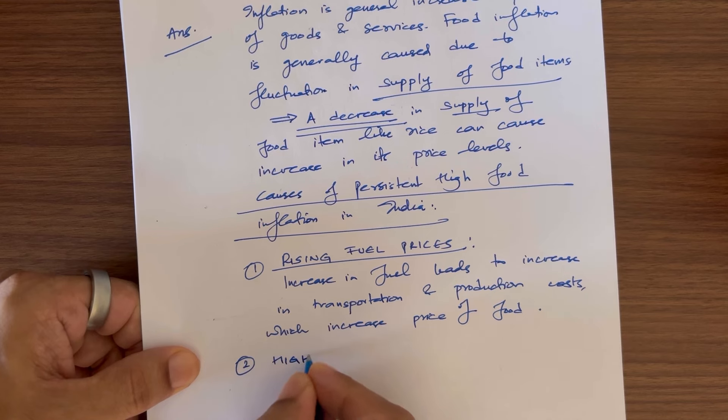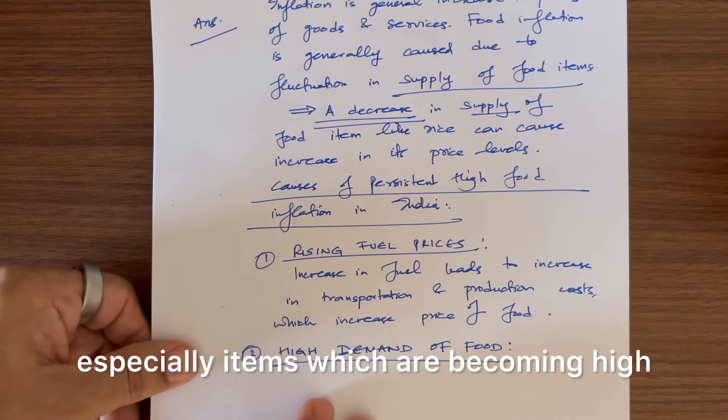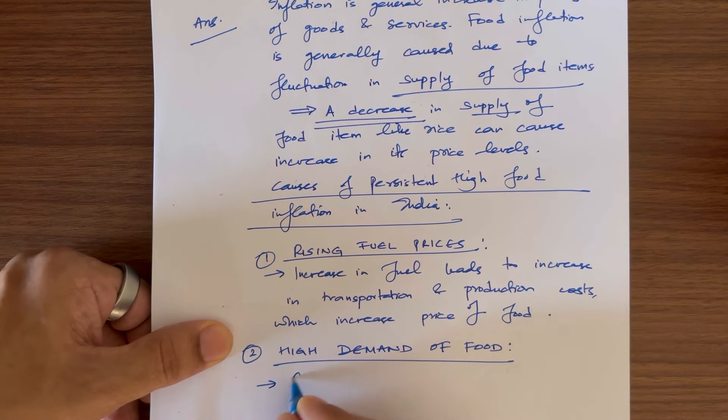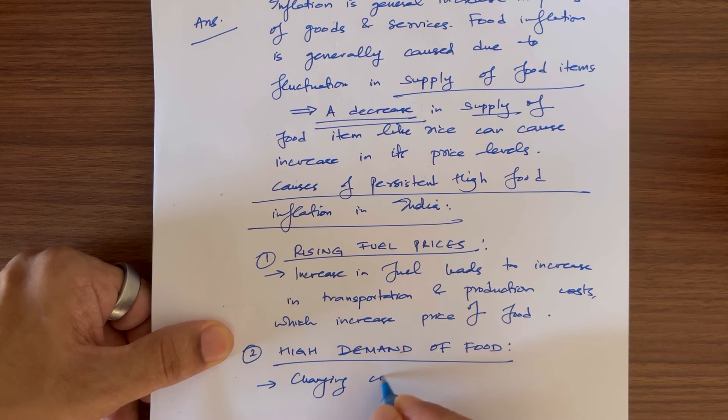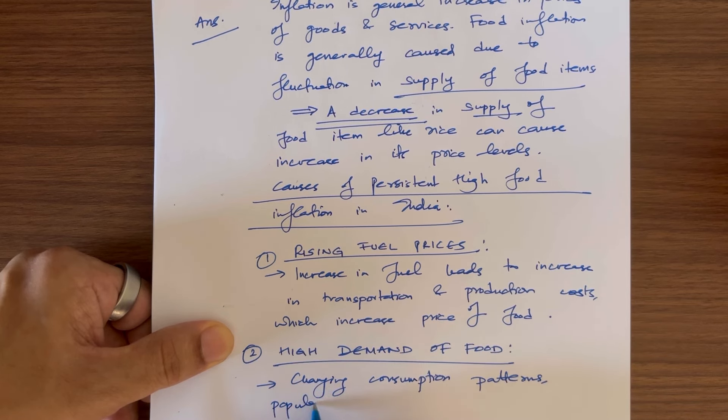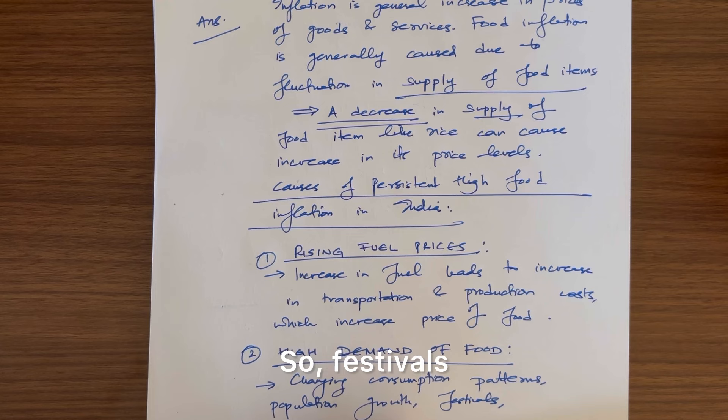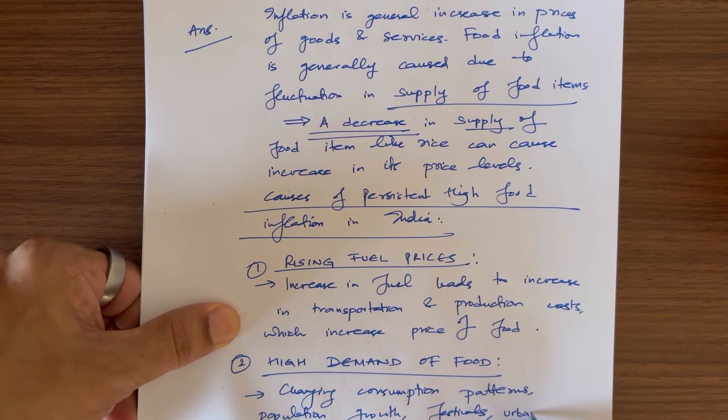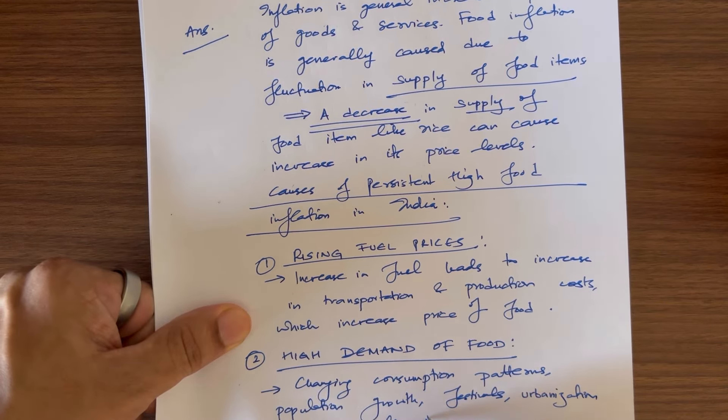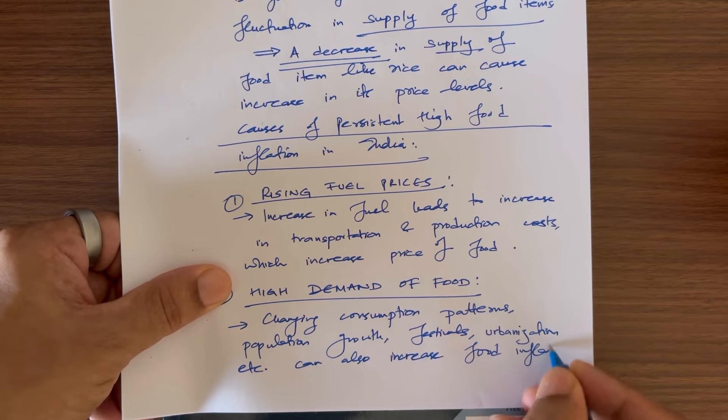High demand of food, certain items, especially items which are becoming high in demand due to maybe festivals, due to population growth, due to changing consumption patterns. Changing consumption patterns, population growth, festivals - during festivals, a particular item might be in more demand. Urbanization, etc. can also increase food inflation.